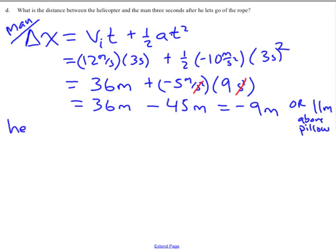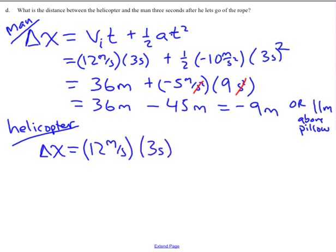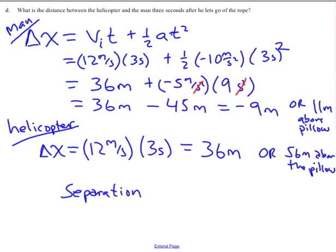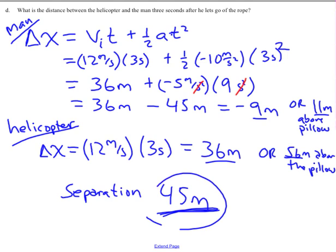What about the helicopter? The helicopter maintains a constant velocity, so in 3 seconds it is displaced 12 meters per second times 3 seconds, which equals 36 meters — or 56 meters above the pillow. Thus, the separation between the man and the helicopter is simply 45 meters. You can see that by taking 56 minus 11 from the pillow's perspective, or just taking the absolute difference. Either way, you get a separation distance of 45 meters.